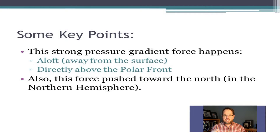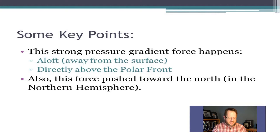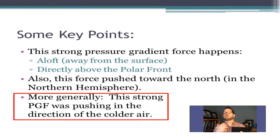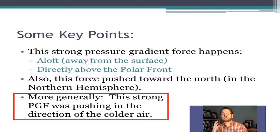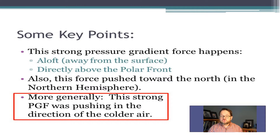There is a very strong pressure gradient force acting aloft — in the middle and upper troposphere, directly above the polar front. In the northern hemisphere, it is pushing toward the north; more generally, it's pushing toward the cold side. Wherever there's a temperature gradient at the surface, the pressure gradient force aloft is pushing toward the cold air. That is a huge, important understanding in meteorology.